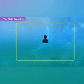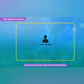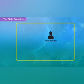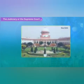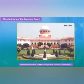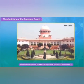In the state executive, the Governor acts as a representative of the President and is the head of the executive. However, the real power rests with the Chief Minister, who heads the Council of Ministers.